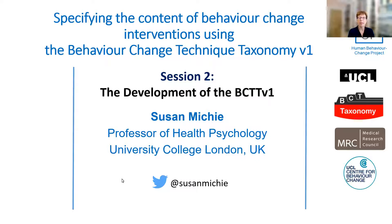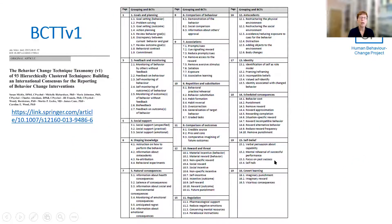I'm going to describe here the development of the behaviour change technique taxonomy. To remind you, here are the 93 items and they're in 16 different groupings, and the original publication has the link here.